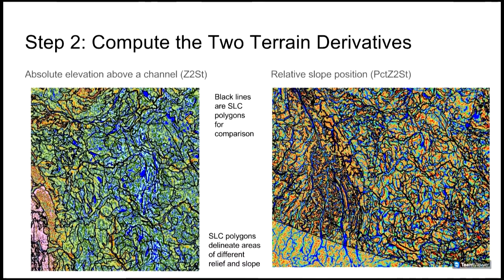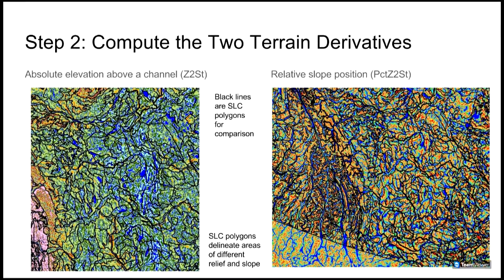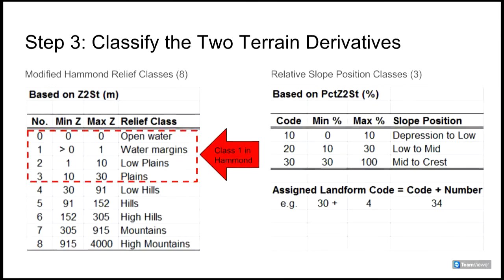This slide illustrates the two terrain derivatives on which the classification is based. These are Z to stream, which is elevation above a channel, and %Z to stream, which is a measure of relative slope position. These variables require prior calculation of hydrological surface flow networks for the entire DEM. An explanatory slide is included in the online version of this presentation for anyone interested in how these two variables were computed.